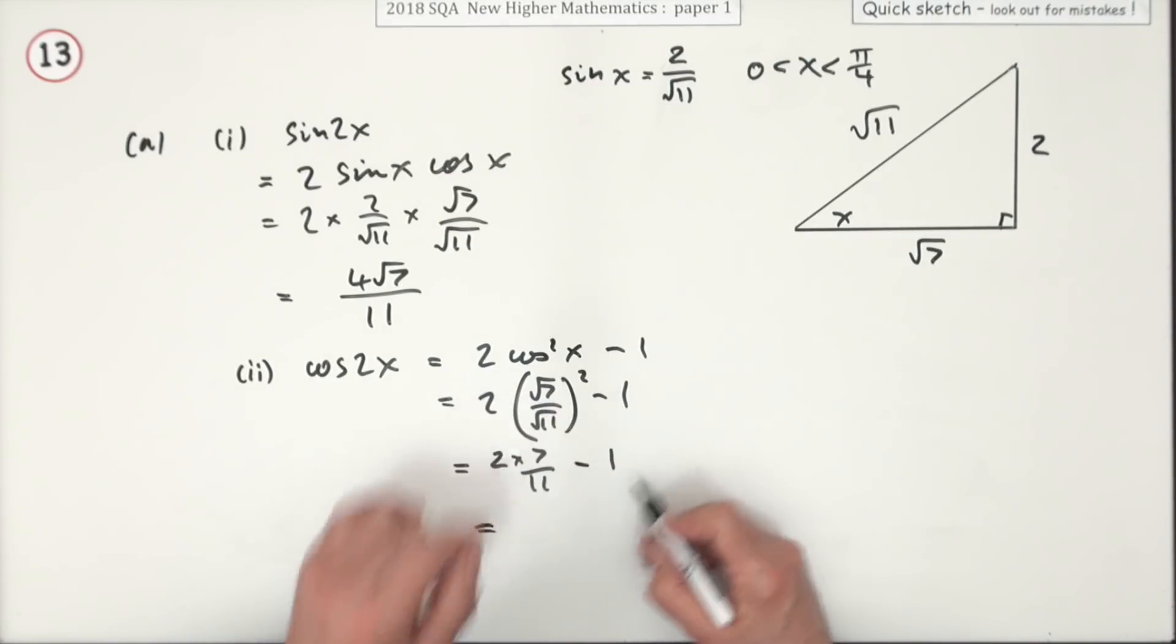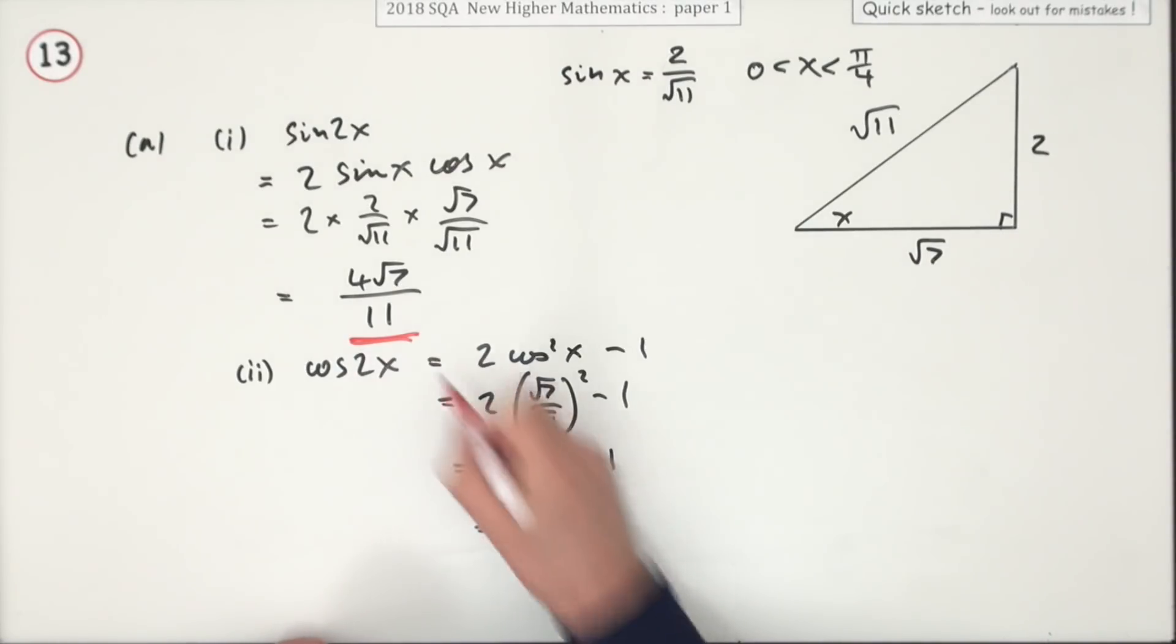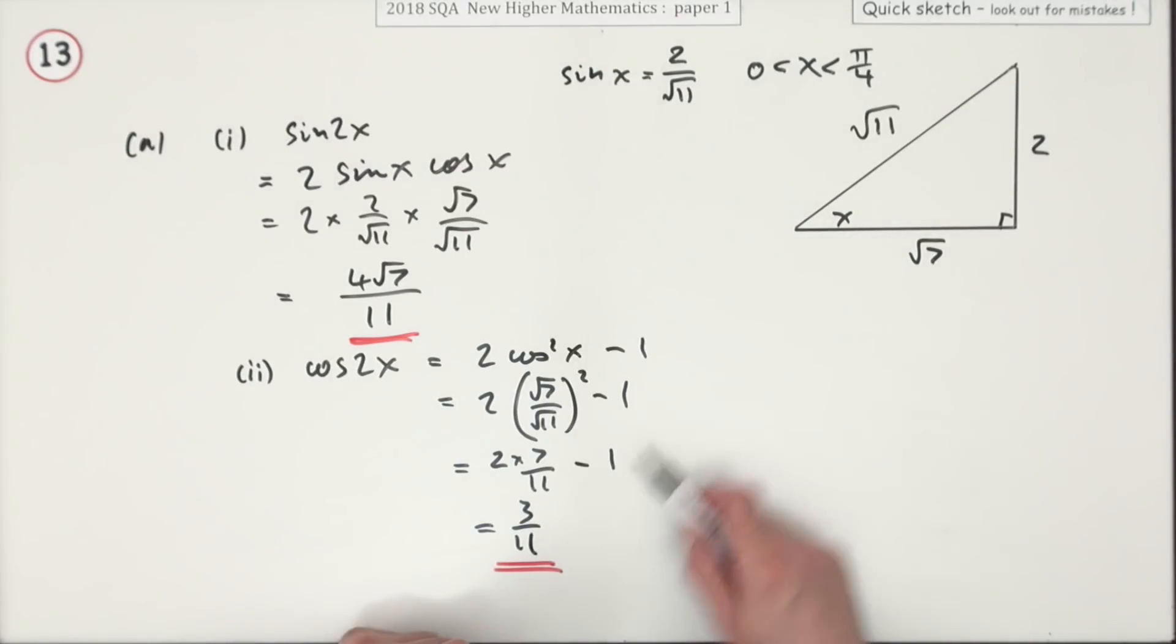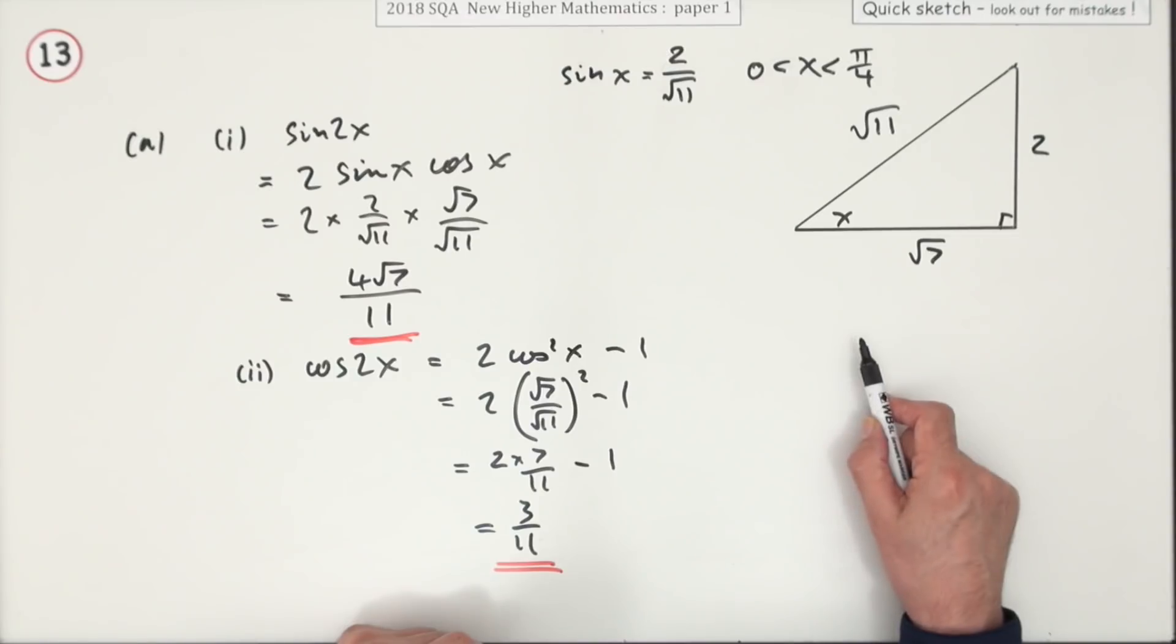So that's 2 times 7 upon 11 minus 1, which is 14 over 11 take away 11 over 11, giving 3 over 11. Or whichever formula you wanted: cos squared minus sine squared, 1 minus 2 sine squared, or even the square root of 1 minus sine 2x all squared.